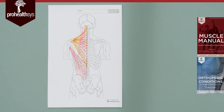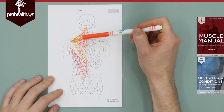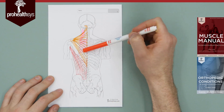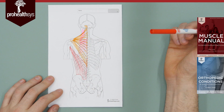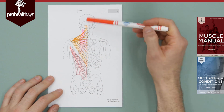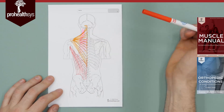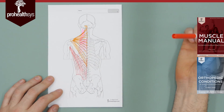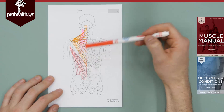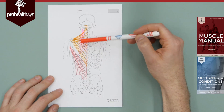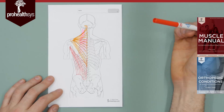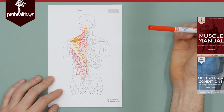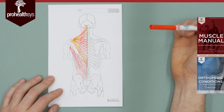One other thing for nerve innervation: trapezius is the spinal accessory nerve, especially for the upper fibers. Latissimus is the thoracodorsal nerve. Levator scapulae, rhomboid minor, and rhomboid major are all the same — that's why you draw them together — the dorsal scapular nerve.